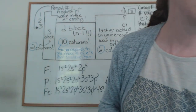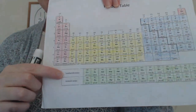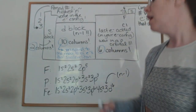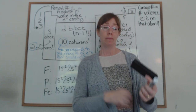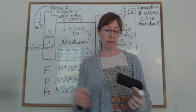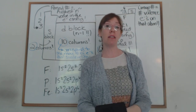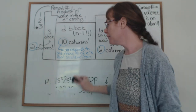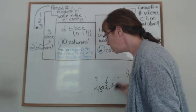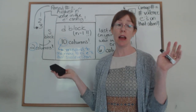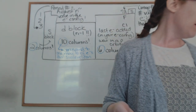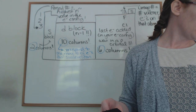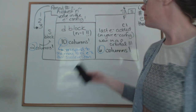For the f block you would subtract two from your row number, but I'm not going to ask you anything about the f block. Reading the periodic table to get electron configurations — if it clicked and it's easy, use it. If you didn't like it, the diagonal rule still gets you the right answer. Either way is fine.